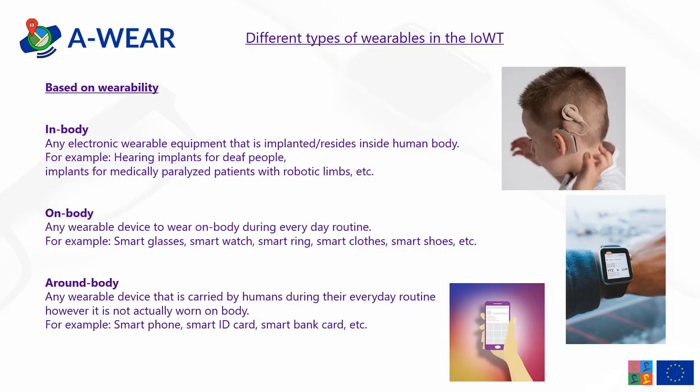Wearables can be classified in several different ways. Based on wearability, I like to classify them into in-body, on-body and around-body wearables. In-body wearables are those electronic equipment which are implanted or reside inside the human body. For example, hearing implants for deaf people or implants for medically paralyzed patients with robotic limbs — such wearables are actually placed inside the human body.